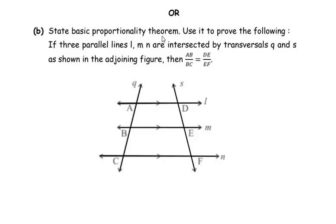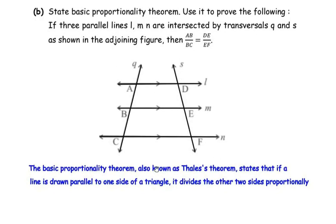State the basic proportionality theorem and use it to prove the following: if 3 parallel lines L, M, and N are intersected by transversal lines Q and S as shown in the adjoining figure, then AB over BC equals DE over EF. The basic proportionality theorem, also known as Thales' theorem, states that if a line is drawn parallel to one side of a triangle, it divides the other two sides proportionally. You only need to state the theorem here — you do not have to prove it.